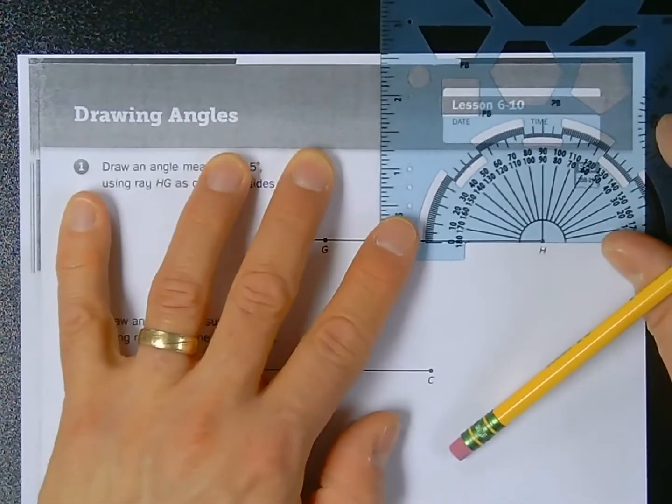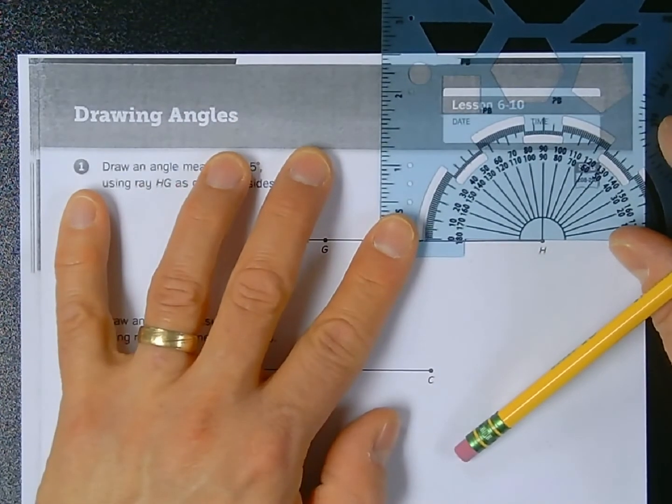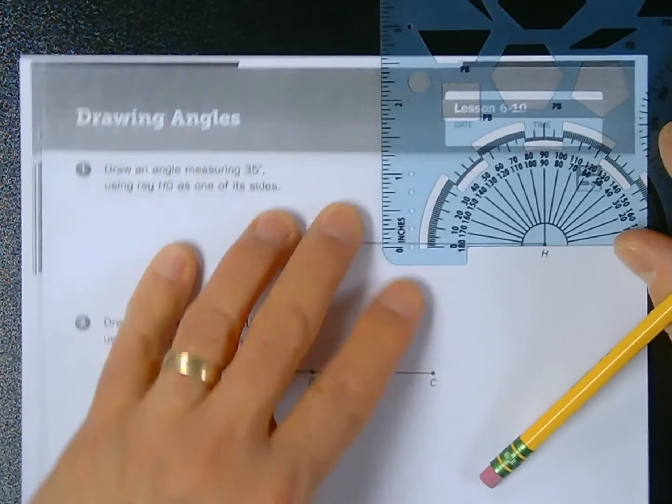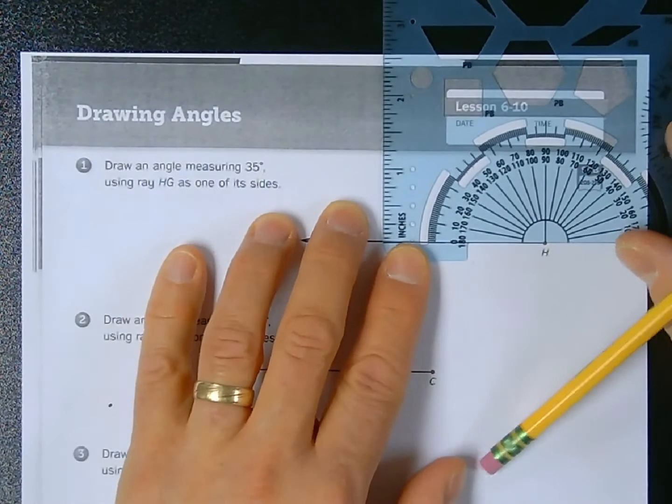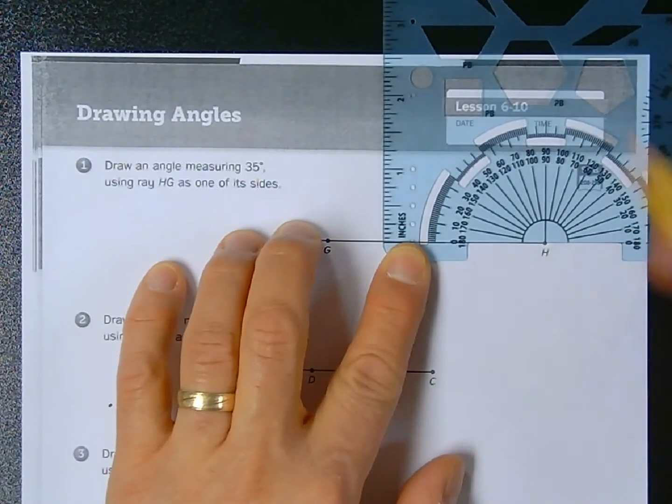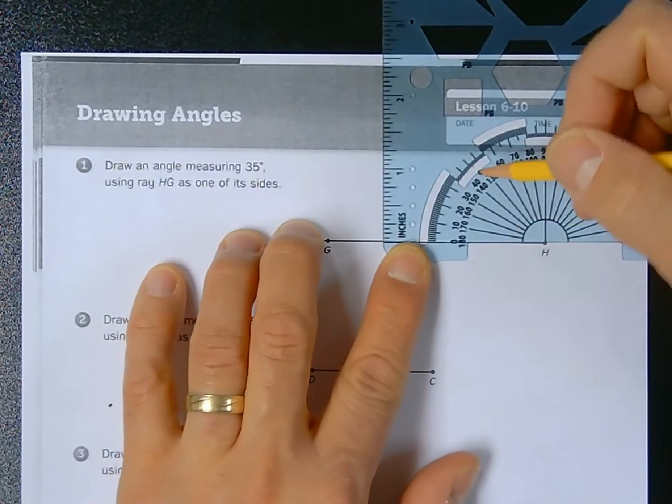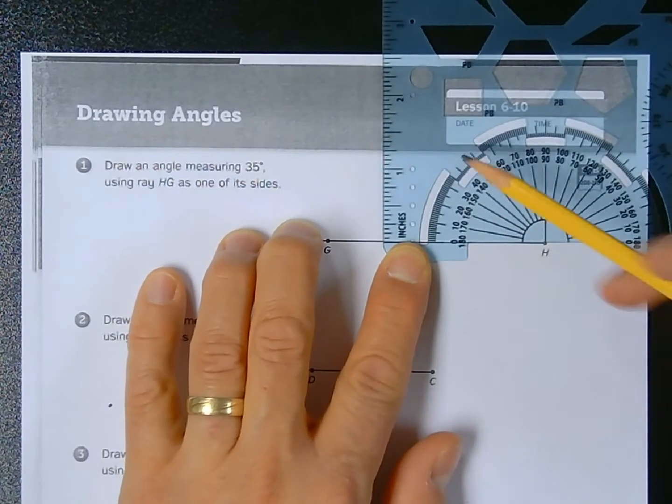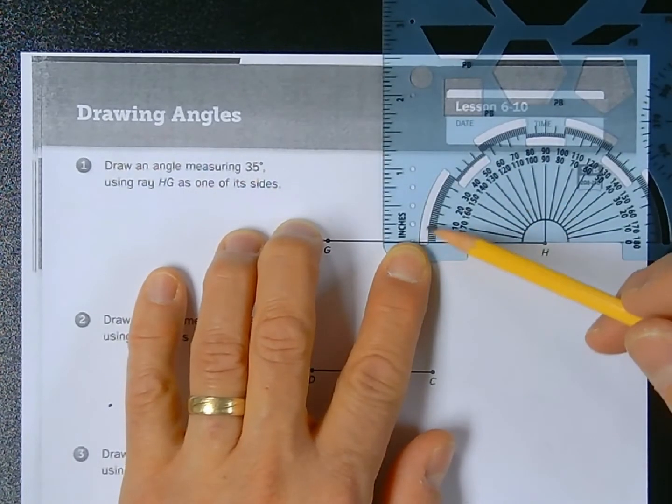I like using the semicircle one better because it allows me to draw some points. If I line up my semicircle protractor and have the zero degree mark on my ray like so, I have to find 35 degrees.